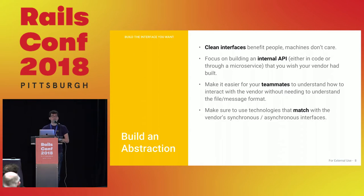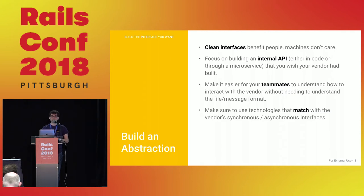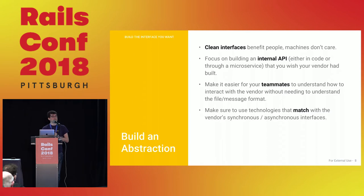Clean interfaces benefit people — machines don't care. Machines will integrate the way you tell them to. The clean interface, the internal API, is really a benefit for you and your teammates. You're actually helping out other people on your team when you build an internal API. This can be in code or through a microservice. You want to carve out a distinctive internal API when integrating with these legacy vendors, making it easier for teammates to understand how to interact without needing to know the specific file format required.